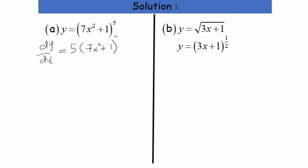...to the power of 4, and then we differentiate what is inside the bracket. Differentiating 7x² + 1 gives 14x. Multiplying 14x by 5 gives 70x, so dy/dx = 70x(7x² + 1)⁴.